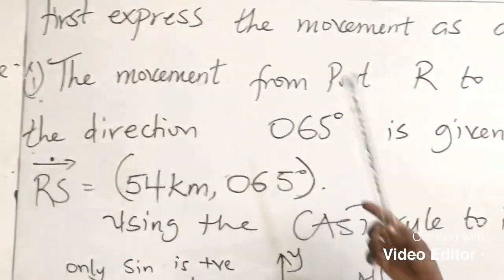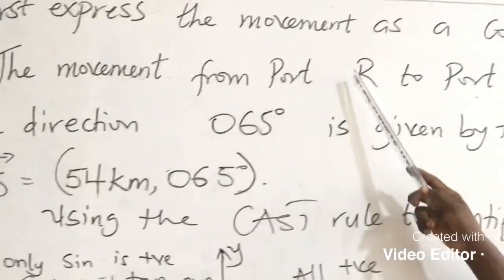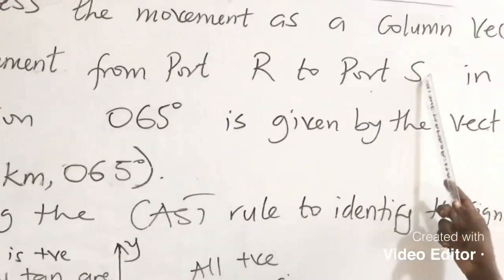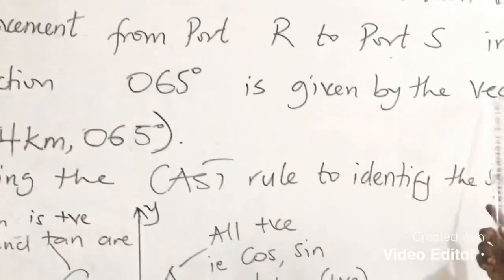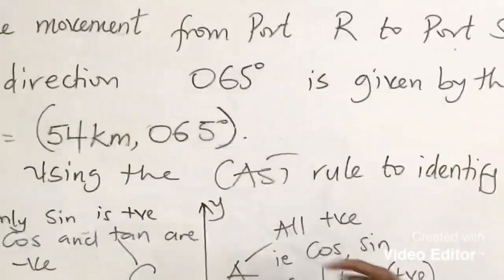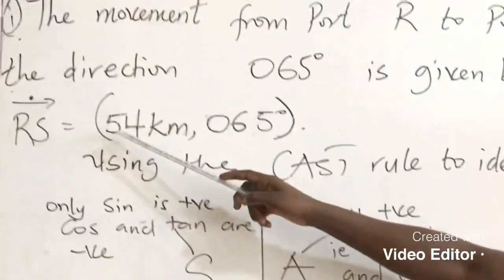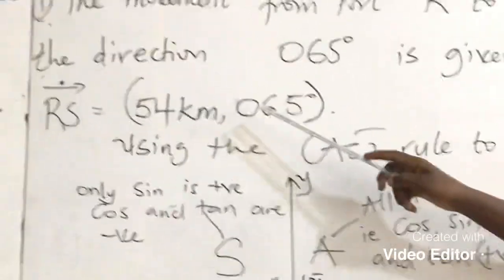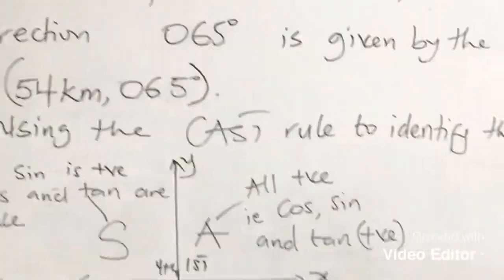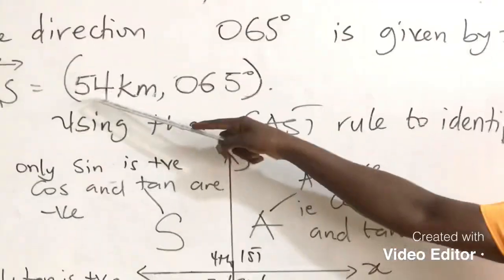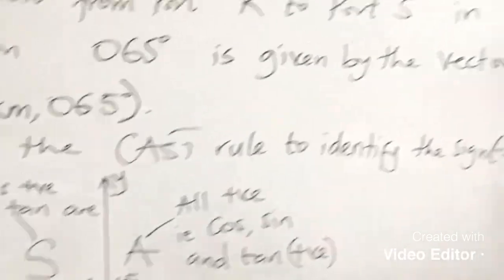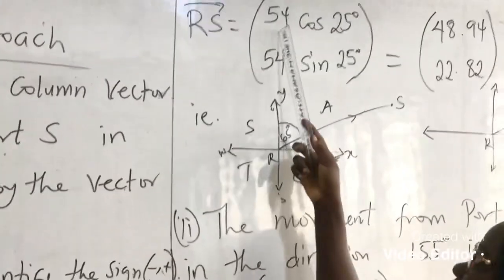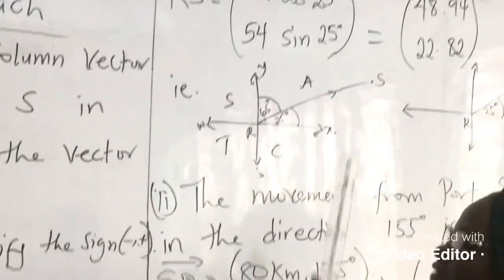The first we have here is the movement from Port R to Port S in the direction of 065 degrees is given by the vector. So this is our distance and this is our direction. It is giving us vector RS of 54 km, 025 degrees.